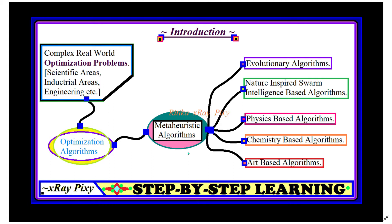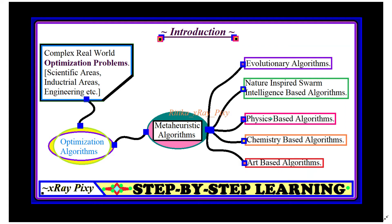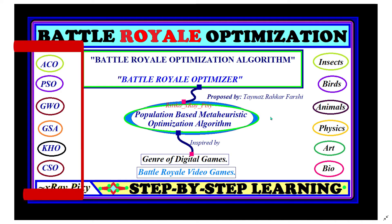Meta-heuristic optimization algorithms are widely accepted to solve optimization problems as they provide promising results. Meta-heuristic algorithms are classified into different categories: evolutionary algorithms, nature-inspired algorithms, physics-based algorithms, chemistry-based algorithms, art-based algorithms, and bio-inspired algorithms. A number of algorithms have already been proposed by different researchers, inspired by insects, birds, and animals.